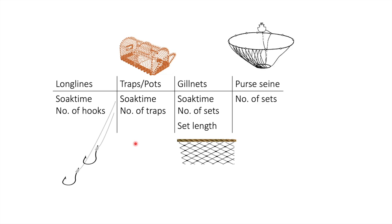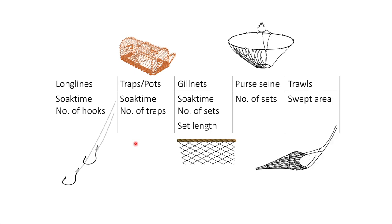Purse seine fisheries tend to use the number of sets as the unit of effort, and lastly, trawl fisheries use the swept area as the unit of effort.